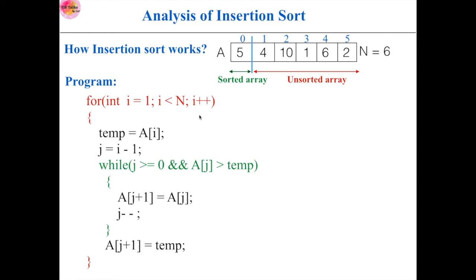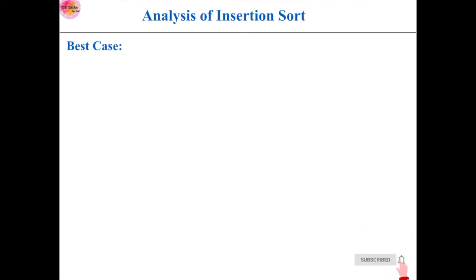This outer loop will take the elements one by one from the unsorted array, and then this inner loop will find out the correct position for those elements in the sorted array. Then the control will come out of this inner loop and it will place that element in that correct position. So this is the basic logic involved in insertion sort.